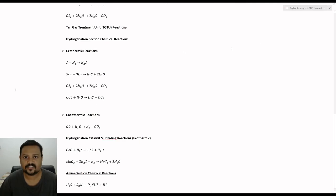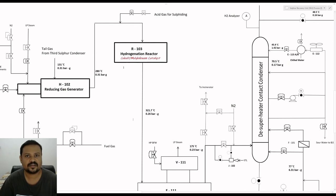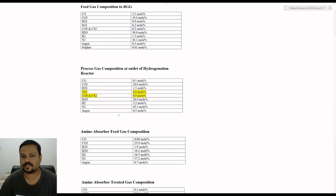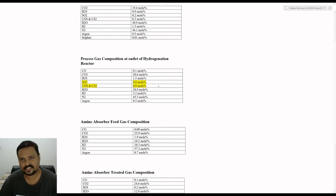All the reactions taking place inside the hydrogenation reactor will be exothermic and a temperature rise will be seen across the reactor, so the outlet temperature will be around 320 degrees Celsius at 0.2 bar. Looking at the process gas outlet at the hydrogenation reactor, we see that all the compounds of sulfur such as sulfur dioxide, carbon sulfide and carbon disulfide have been converted to H2S. The concentration of sulfur dioxide and carbon sulfide and carbon disulfide will be 0 mole percentage.